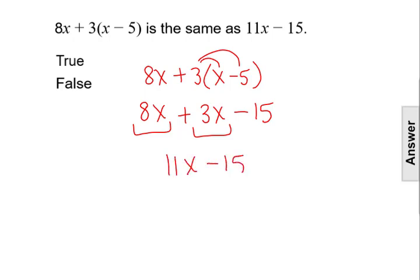Then we bring down the minus 15. We can't combine 11x and negative 15 because those are not like terms. The 15 doesn't have the variable x with it. So that is as simplified down as we can go.